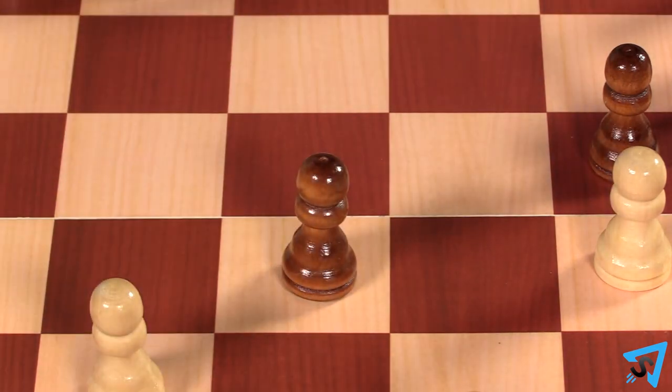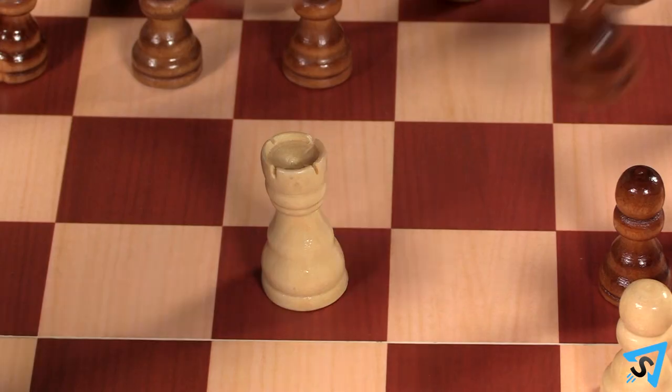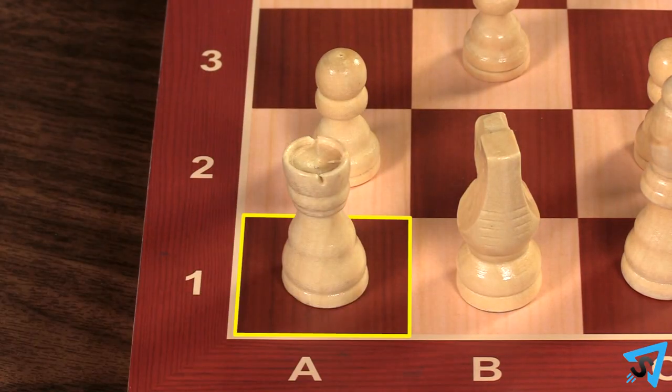Rooks, Knights, and Bishops return to the starting square which is the same color as the square they are captured on.